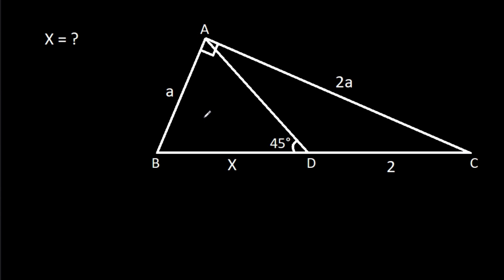In this video, we have been given that angle BAC is 90 degrees, angle ADB is 45 degrees, AB is a, AC is 2a, CD is 2, and BD is x. Then we have to find x.